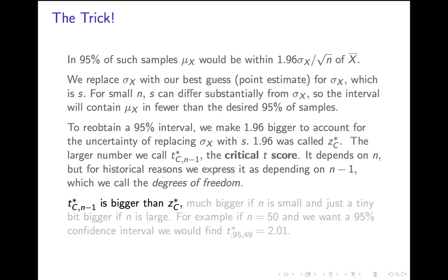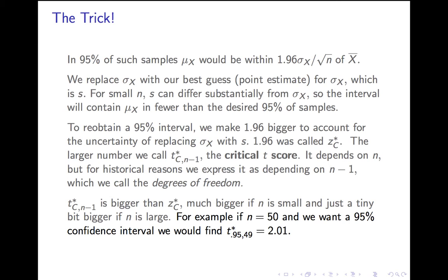What you need to know about t* is a couple of qualitative facts: t* is bigger than z*, because we had to expand the interval to account for uncertainty. It's much bigger if n is small, and just a tiny bit bigger if n is large. For example, in our case where n was 50 and we wanted a 95% confidence interval, t* sub (0.95, 49) works out to be 2.01 — just a little bigger than the 1.96 we would have used if we had known sigma.